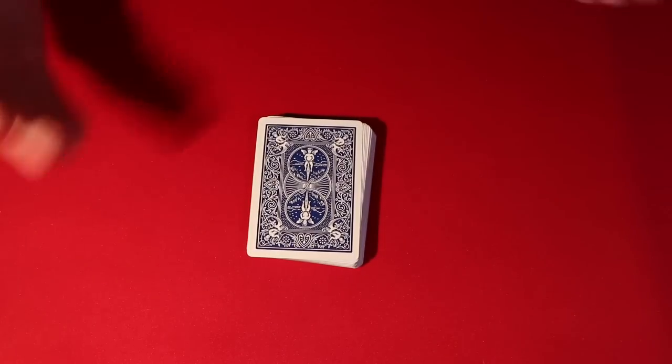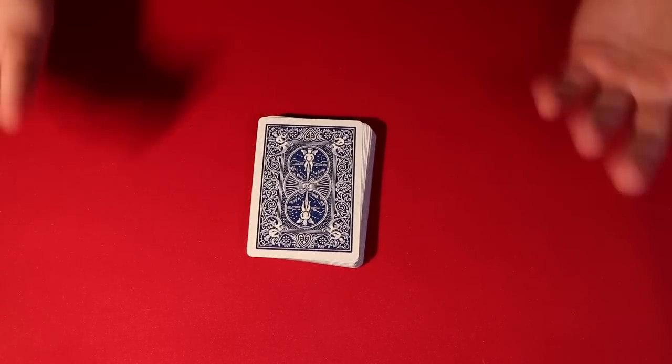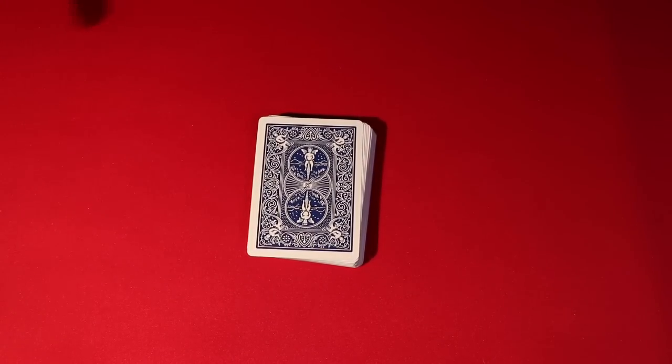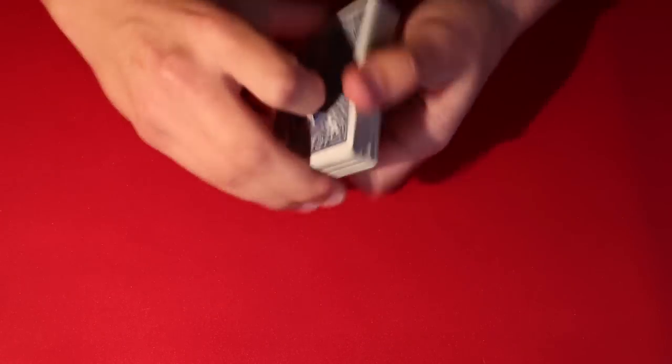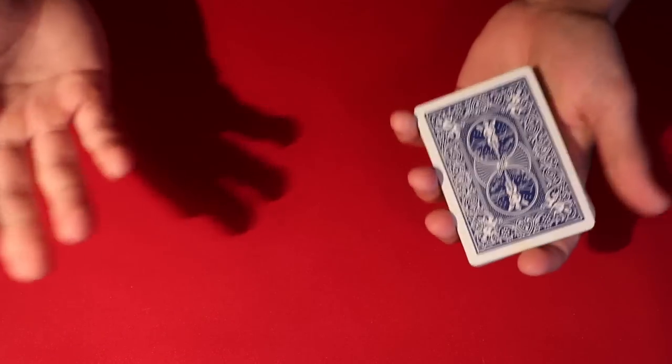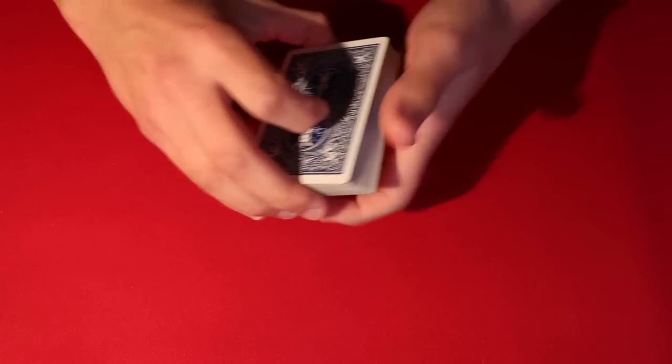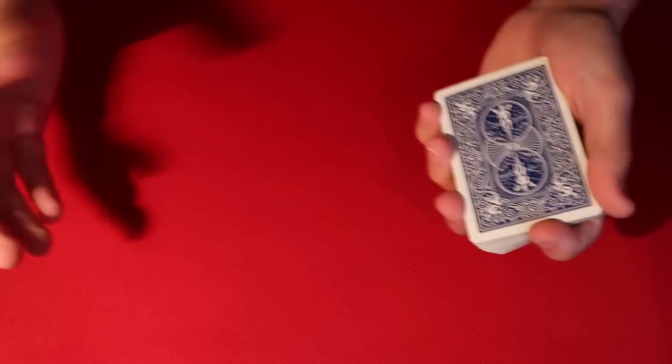At this point what you do is you tell your spectator, okay, I want you, you know, you can pick any number in the deck if you want to, it really doesn't matter and you can pick any number but to make things simple we can do 10 through 20 or you know, whatever you want. But essentially you have them pick a number and let's say I'll do 10 through 20.